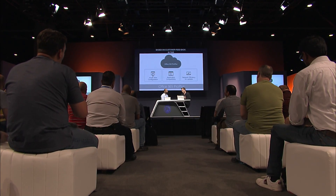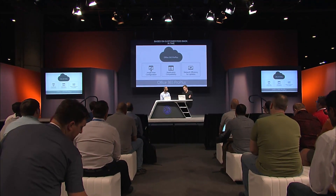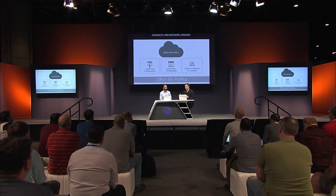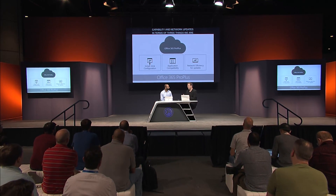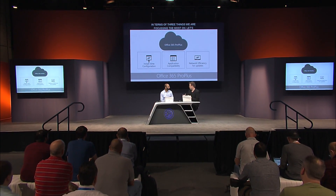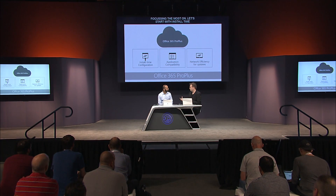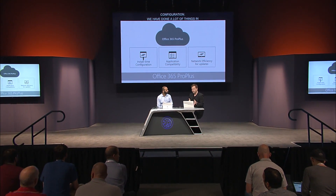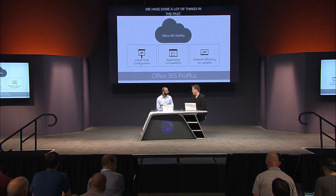We focused on three things based on customer feedback: install time configuration, application compatibility, and network efficiencies for updates. In terms of install time configuration, we've done a lot in the past around granularity of control and package types. For Click to Run, we're now giving you much more granularity. We'll start with install time config, then move on to app compat and network efficiency.